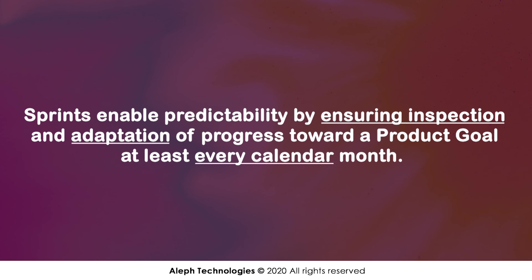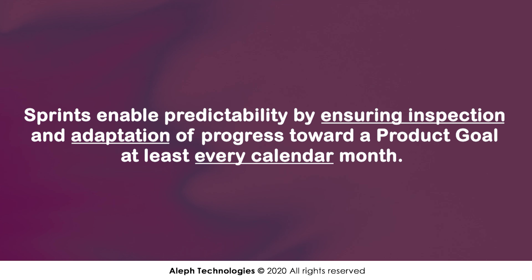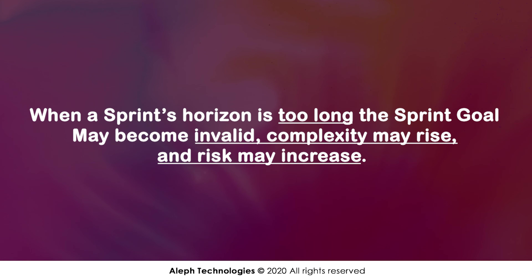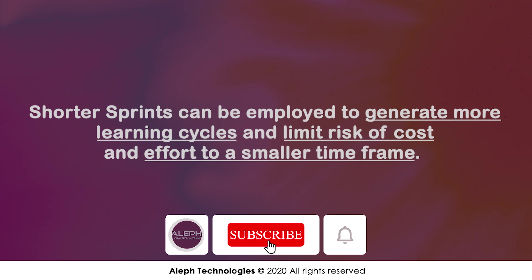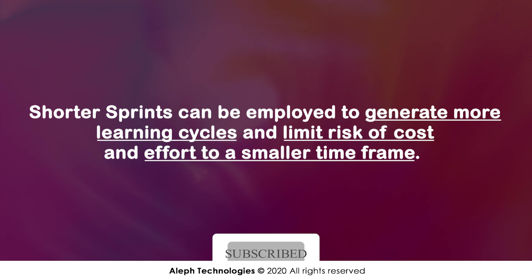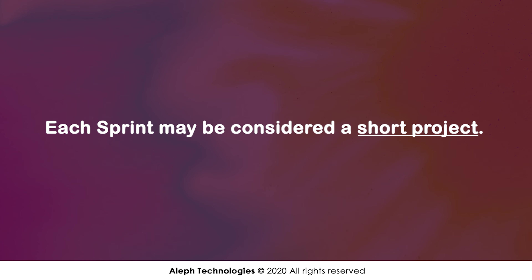Sprints enable predictability by ensuring inspection and adaptation of progress toward a product goal at least every calendar month. When a sprint's horizon is too long, the sprint goal may become invalid, complexity may rise, and risk may increase. Shorter sprints can be employed to generate more learning cycles and limit risk of cost and effort to a smaller time frame. Each sprint may be considered a short project.